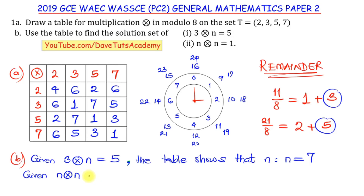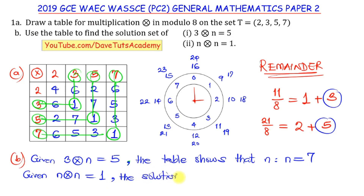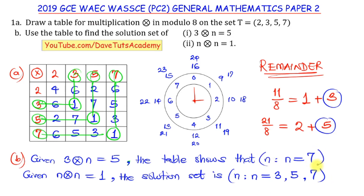For n × n ≡ 1 (mod 8), we look for all entries of 1 along the diagonal where a number multiplies itself. We find 3 × 3 ≡ 1, 5 × 5 ≡ 1, and 7 × 7 ≡ 1. So the solution set is {n : n = 3, 5, or 7}.